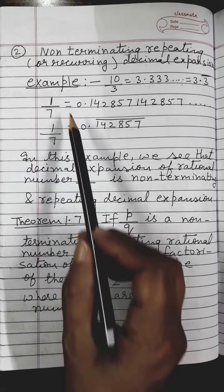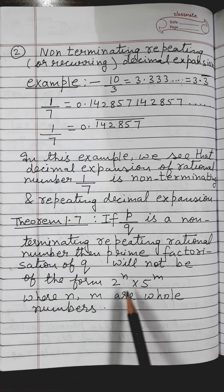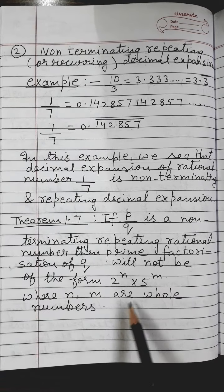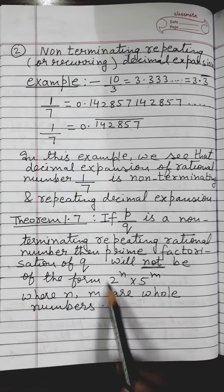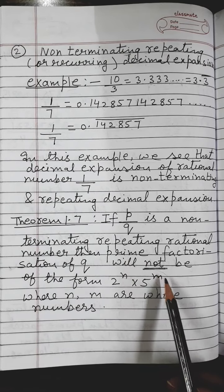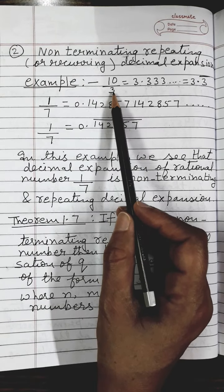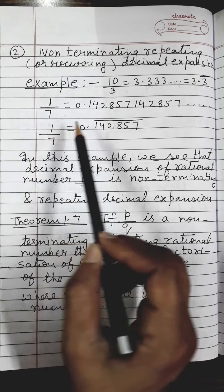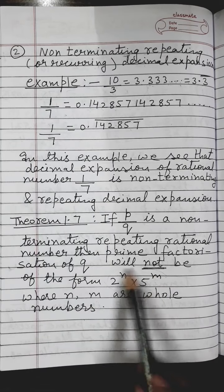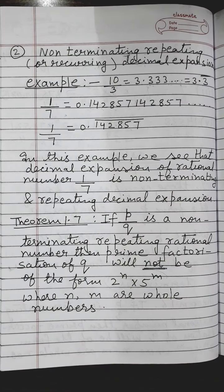If P upon Q — like 1 upon 7 or 10 upon 3 — is a non-terminating repeating rational number, then theorem 1.7 says the prime factorization of Q will NOT be of the form 2^n into 5^m where n and m are whole numbers. This is the difference: for terminating it IS of this form, for non-terminating recurring it is NOT of this form. Whole numbers start from 0, 1, 2, 3, 4, 5, 6... So this is the meaning of non-terminating repeating or recurring decimal expansion. I hope children you have understood today's lecture. Bye bye.